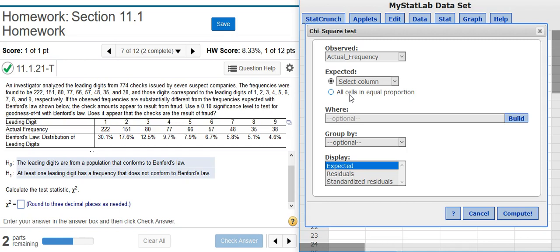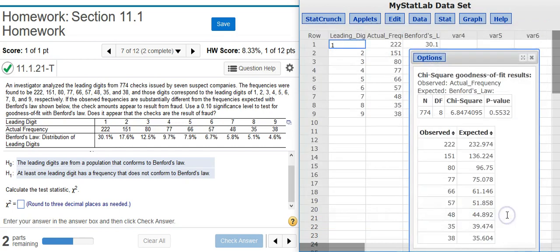The expected frequencies are what we would theoretically expect or anticipate. So in this case, it's going to be the distribution that we're claiming the digits conform to, Benford's Law. We actually have a column for that, so I'm going to select it here. Everything else is just fine for our purposes, so I'm going to hit Compute.